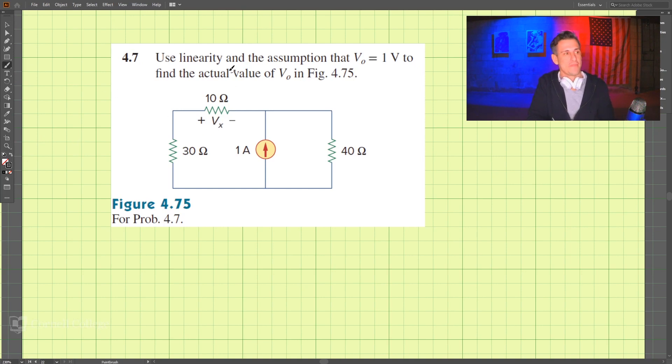This is problem 4.7 and we're supposed to be using linearity and the assumption that V0 equals 1 volt to find the actual value of V0. So we are assuming that V0 is 1 volt, and there's a typo here - this is supposed to be V0. V0 is here and we're to use linearity to solve this problem. So what we're actually trying to find is the source here.